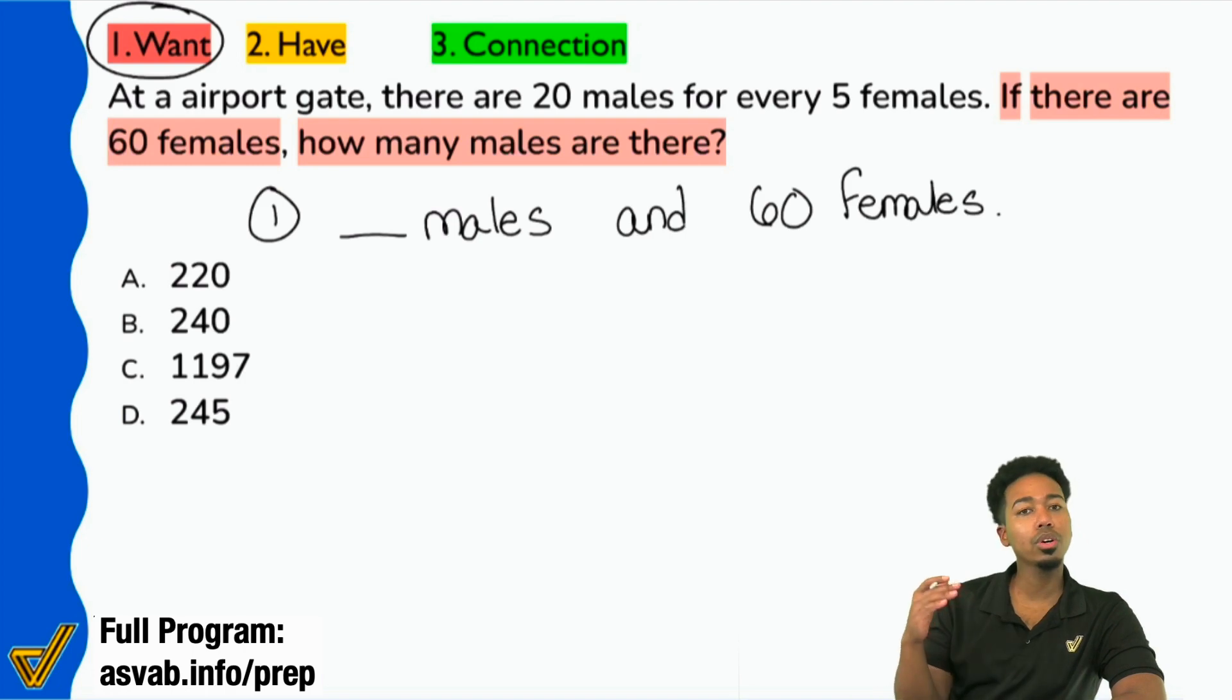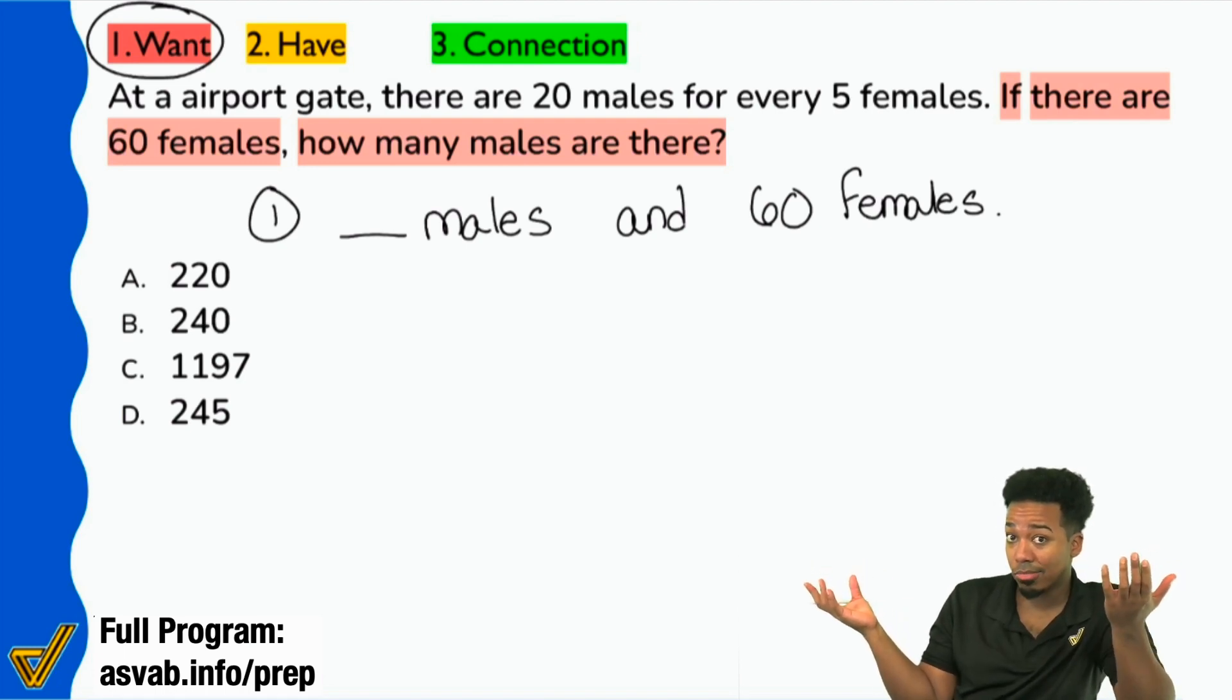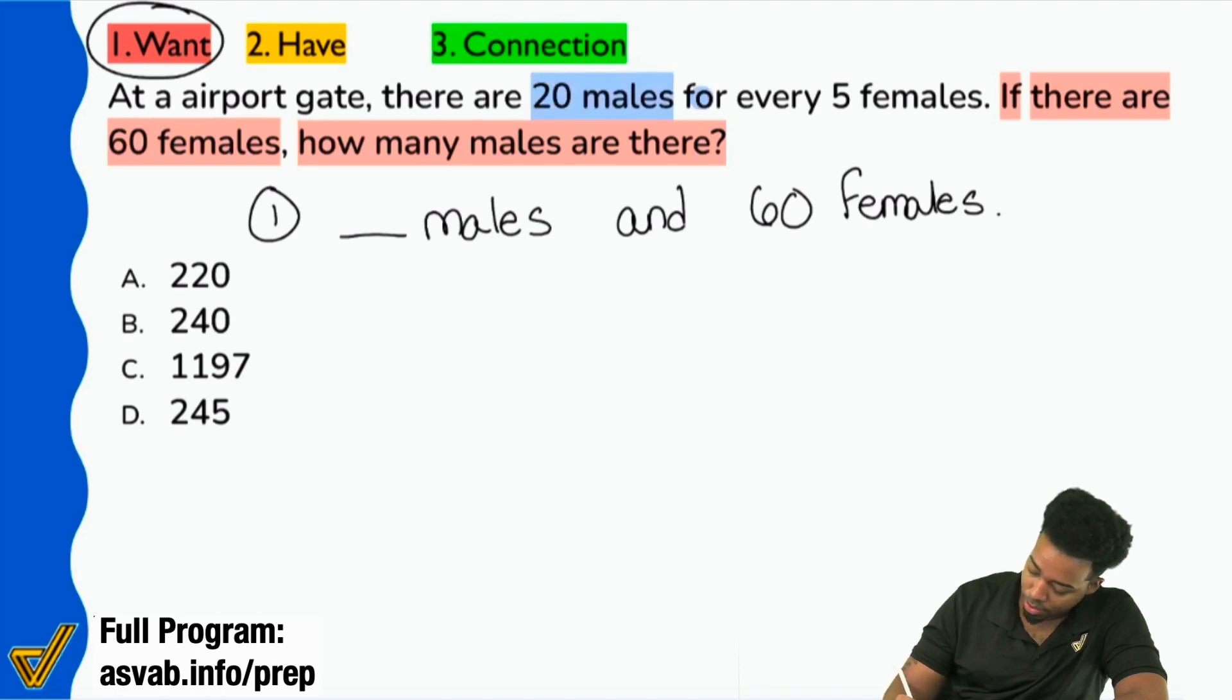So here's what we're going to do next. What we're going to do next is we're going to gather the information that we have. Again, the first step, point out the question. Step two, what information do we have that could possibly help us answer that question? So what information do I see though? I see that at an airport gate, let's read it from the top there, at an airport gate, there are 20 males for every five females. Okay, so we have 20 males for every five females.